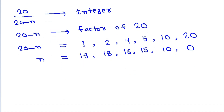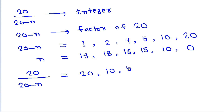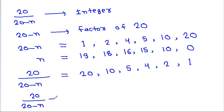So 20 divided by (20 minus n) will equal: 20/1 = 20, 20/2 = 10, 20/4 = 5, 20/5 = 4, 20/10 = 2, and 20/20 = 1. Then 20/(20 minus n) minus 1 gives values: 19, 9, 4, 3, 1, and 0.